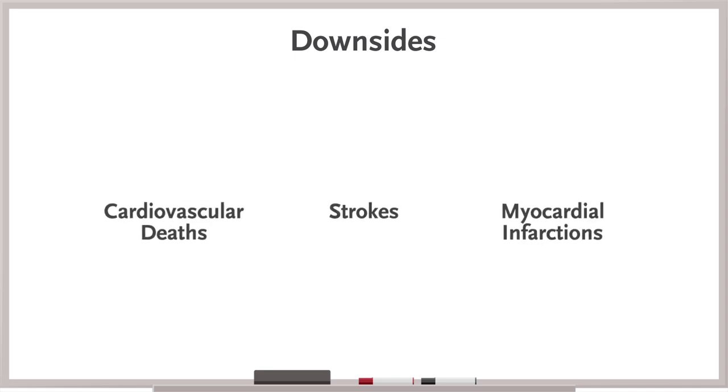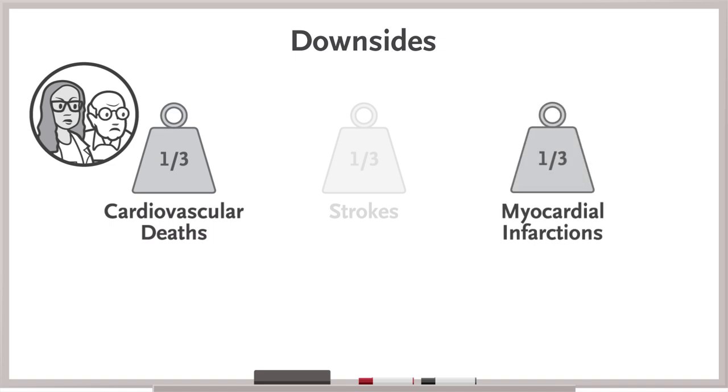But, of course, using a composite outcome has downsides to consider. First, each component of a composite outcome is typically given equal weight, even though each component might not be equally important. Cardiovascular death is likely more meaningful to patients and doctors than an uncomplicated MI.